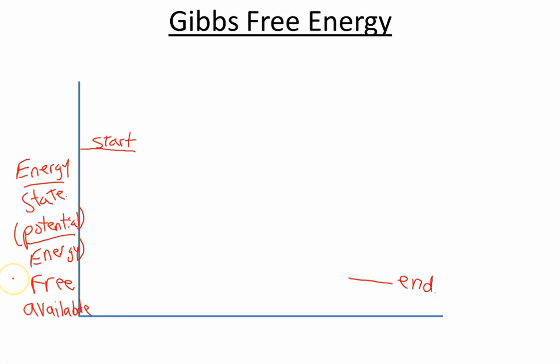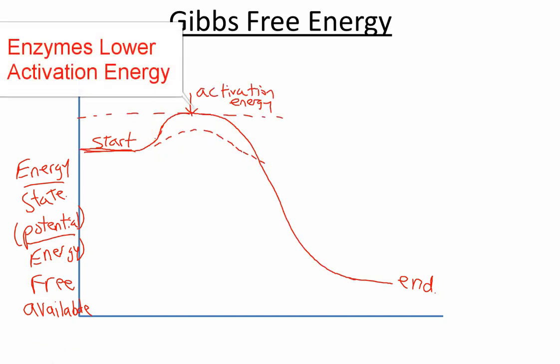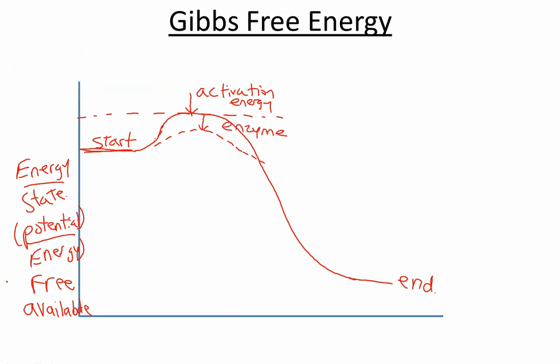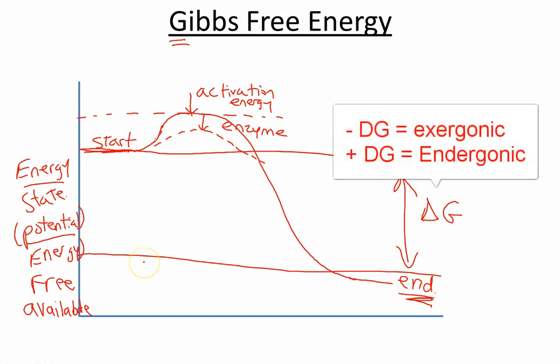So, Gibbs free energy is going to look at the energy state over the course of a reaction. I like to think of it as available energy because it's energy that can be used. This enzyme is going to lower the energy needed to put into the reaction. One thing to keep in mind, this is what's known as Delta G. It's the same whether or not there's an enzyme, and whether or not there's no enzyme.